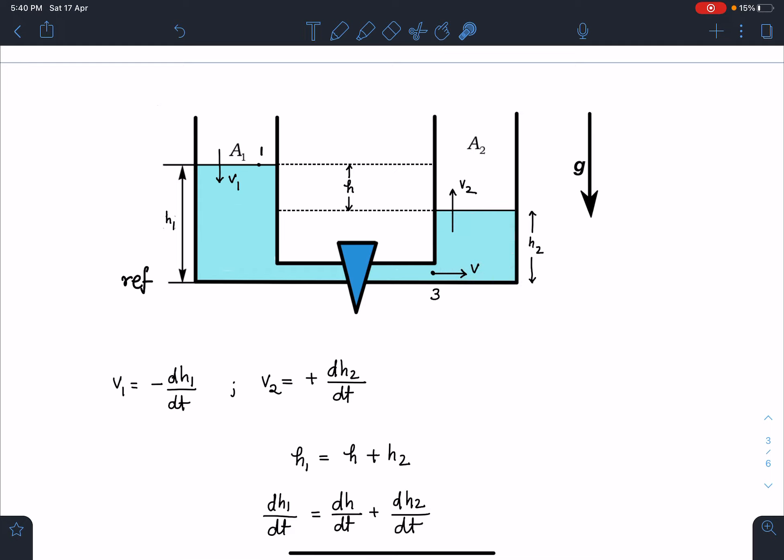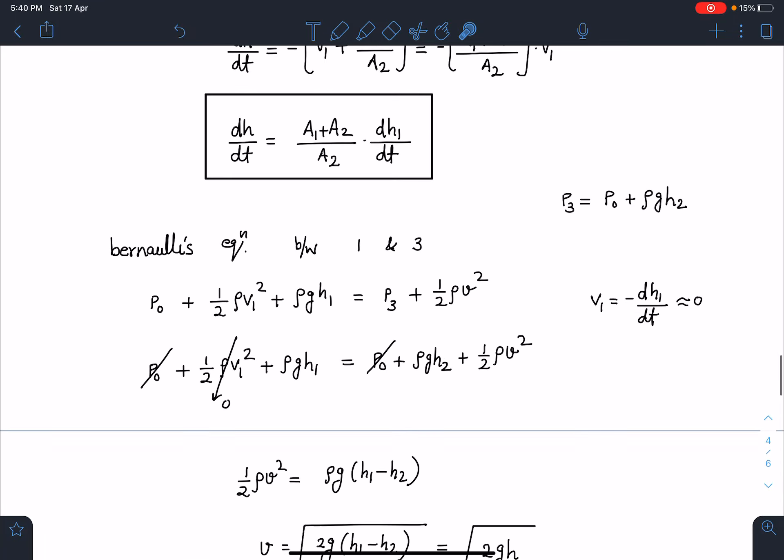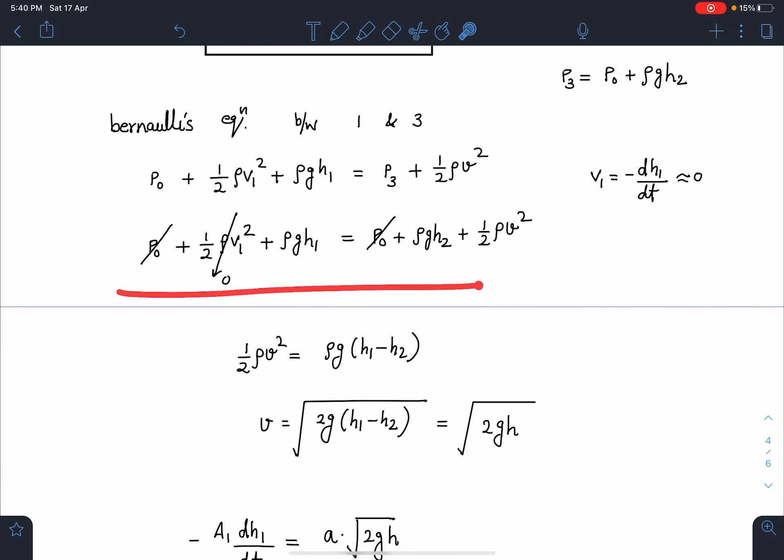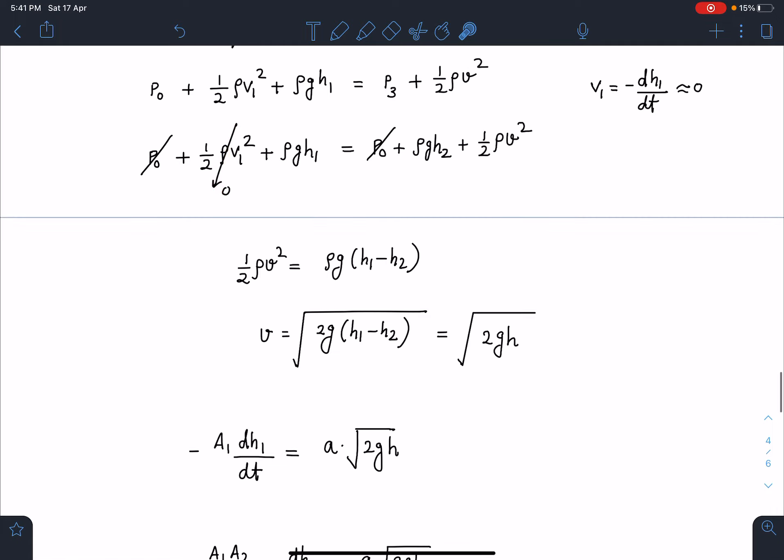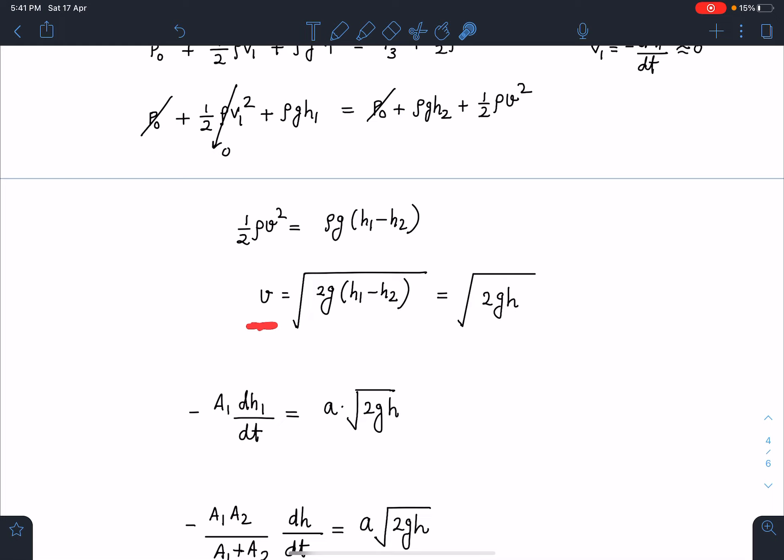You can see from here that p3, because this area A2 is also very large, so almost you can assume that this liquid is nearly stationary. v2 will be very small. By using equation of continuity we can say, so I can write this as actually v2 is dh2/dt but its value is very small compared to this. So I can assume this liquid to be stationary nearly. So pressure at 3 I can write as simply p0 + ρgh2. When I substitute the value in this equation, p0 I can cancel out, and v1 which is minus dh1/dt, it is very small compared to ½ρv², so this term ½ρv1² also we are ignoring. So when you simplify this relation you are going to get v equals √(2gh1 - h2), which I can write as √(2gh).